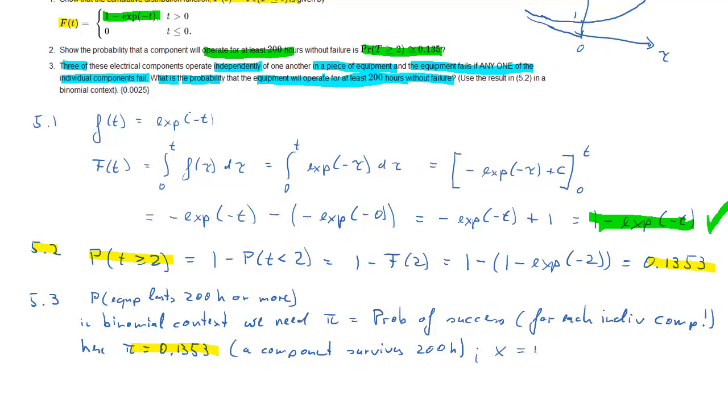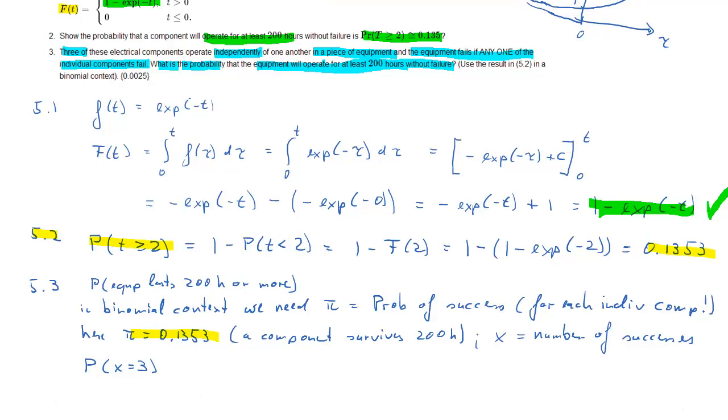What we now need is the probability of three successes, three successes meaning three survivals over 200 hours. So we call x the number of successes, and therefore we need probability of x equal to 3.